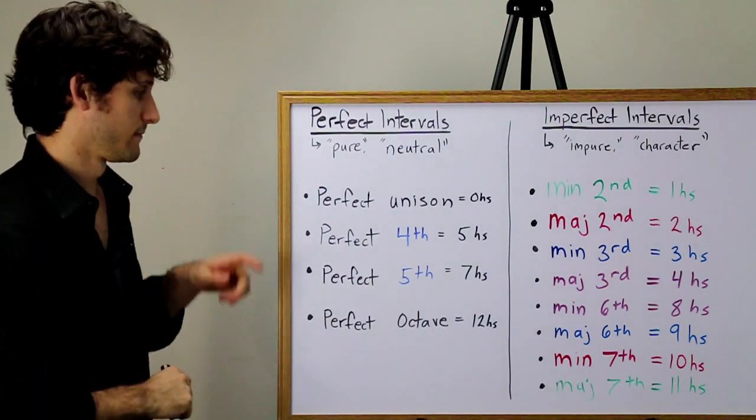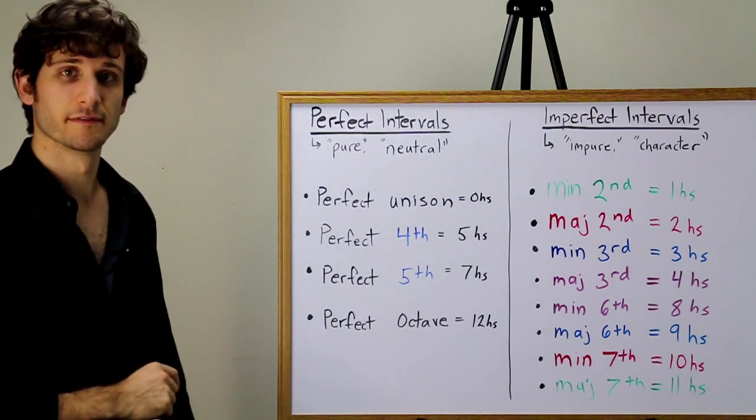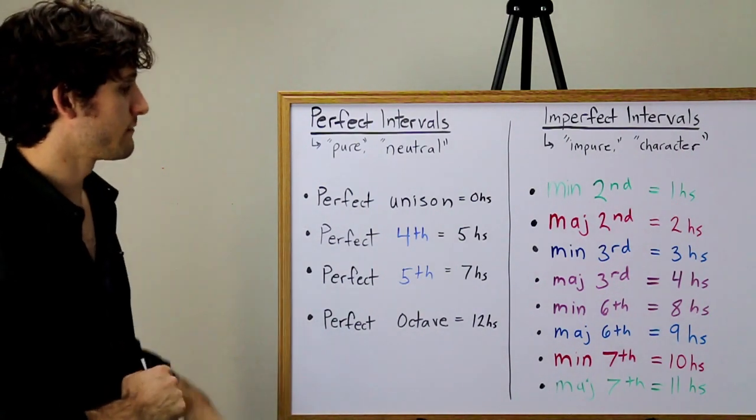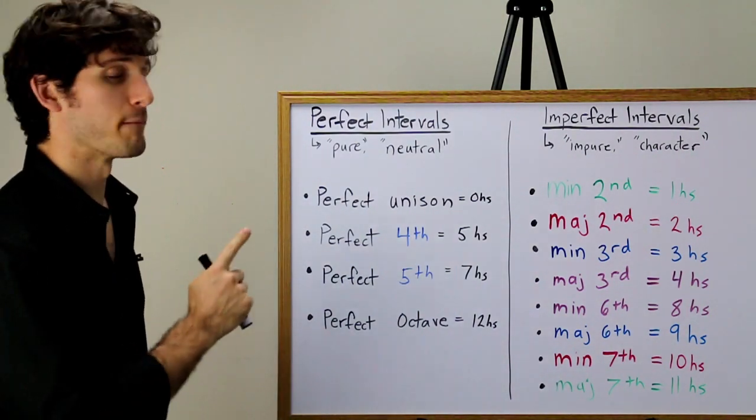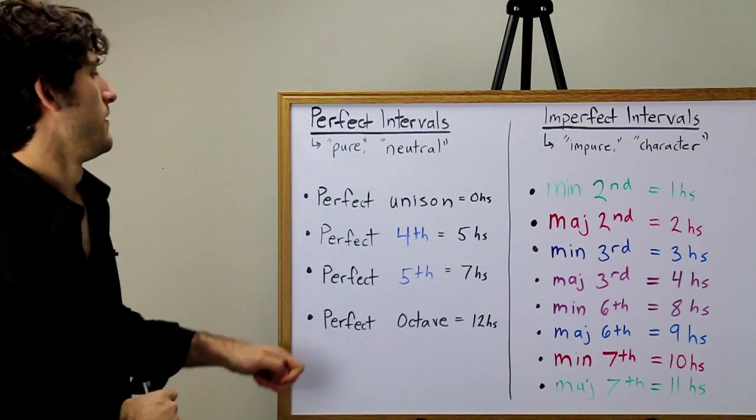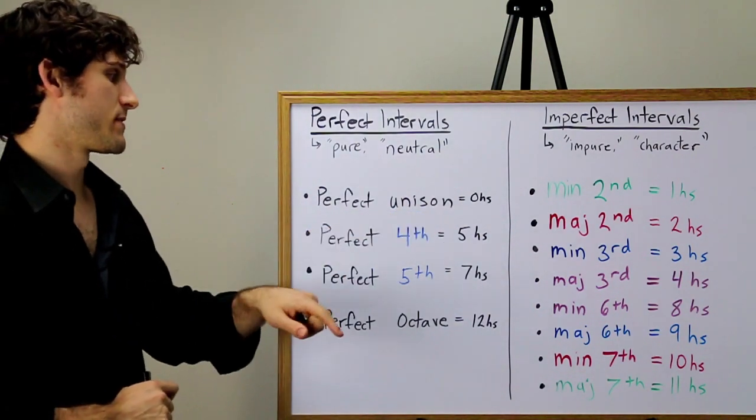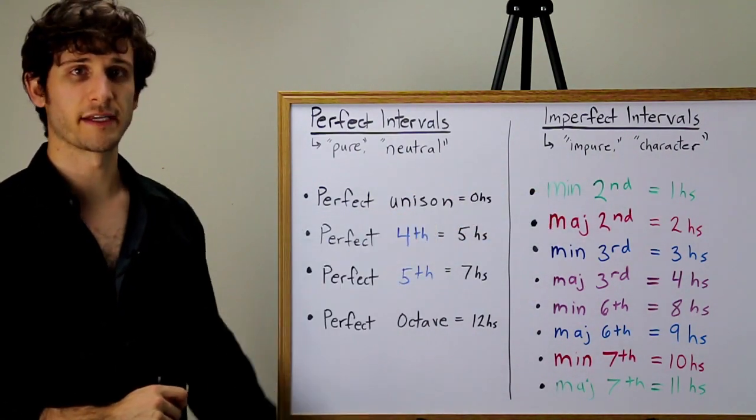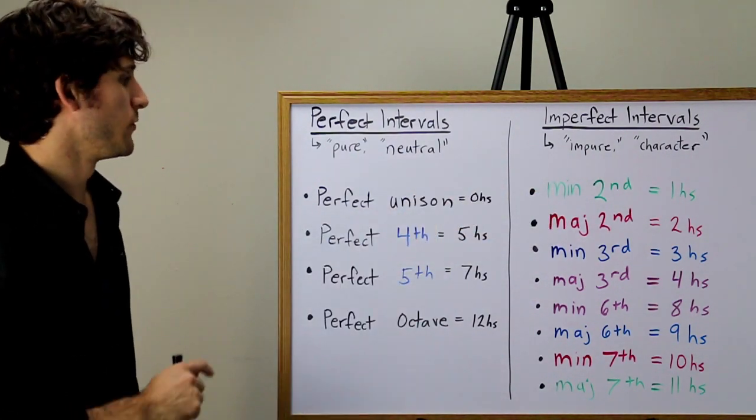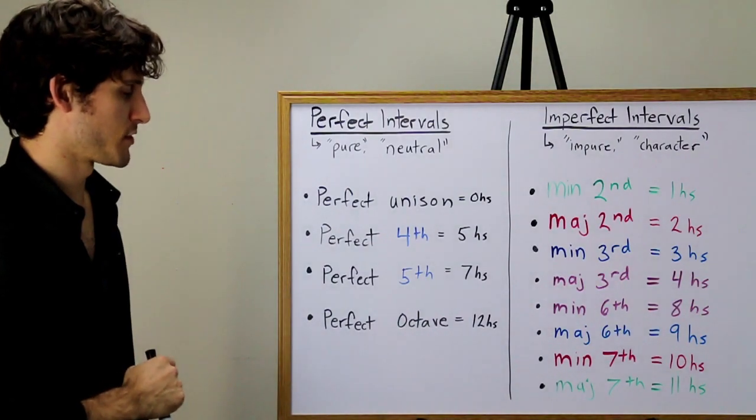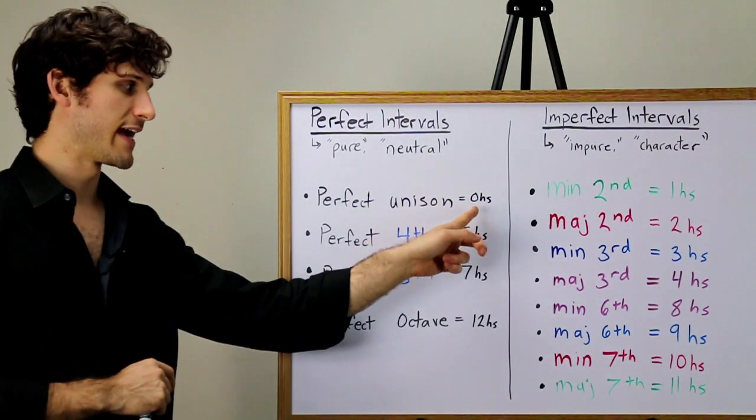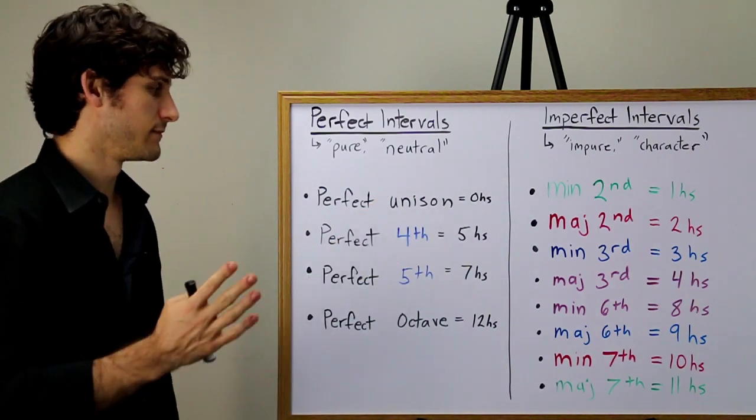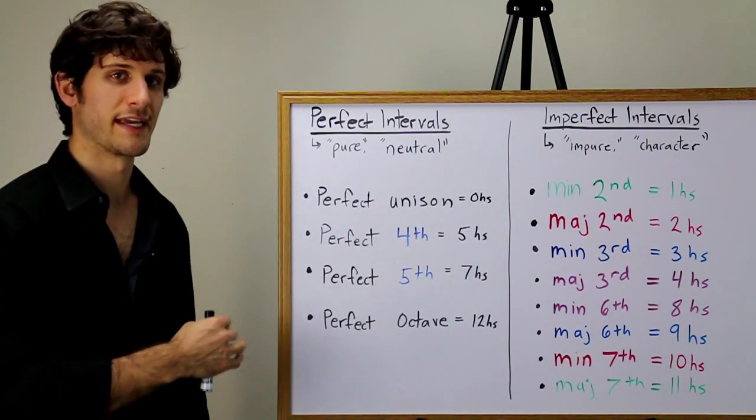By the way, unison is a perfect interval. Can it be augmented and diminished? Well, you can, in fact, have a unison, an augmented unison. Unison is zero half steps. An augmented unison is simply a half step. One half step. Same thing as a minor second. You can't have a diminished unison. It's just physically impossible because it would be negative one here. You can't have a negative distance between two notes. But it is interesting that you can have a perfect unison and an augmented unison.